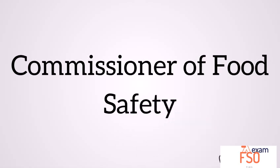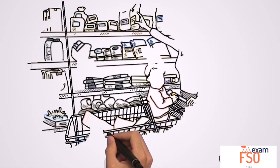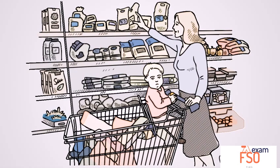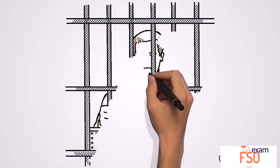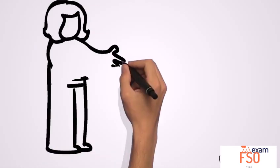First, commissioner of food safety. Commissioner of food safety is the head of food authority of the state. Functions of commissioner of food safety are: stop buying or selling of things, conduct survey, conduct training program, charge somebody with a crime, and hand over power.